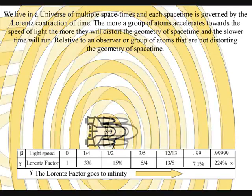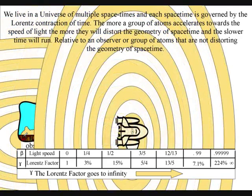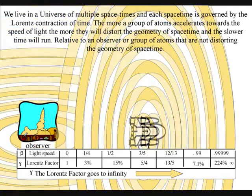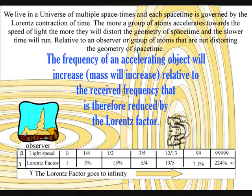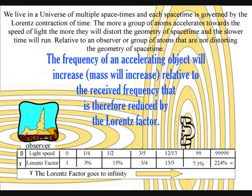We have time dilation for an object accelerating towards the speed of light, and gravitational time dilation around objects of great mass, because the greater the momentum, the shorter the wavelength, and the higher the frequency.